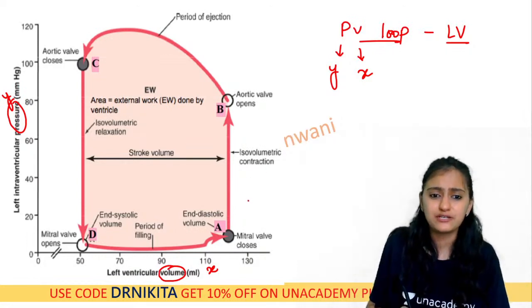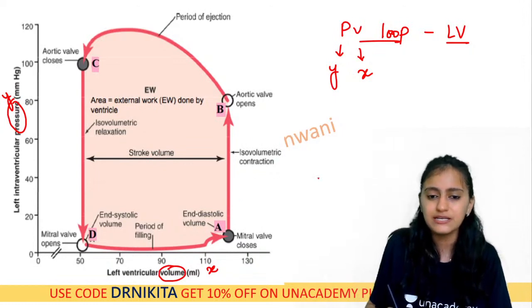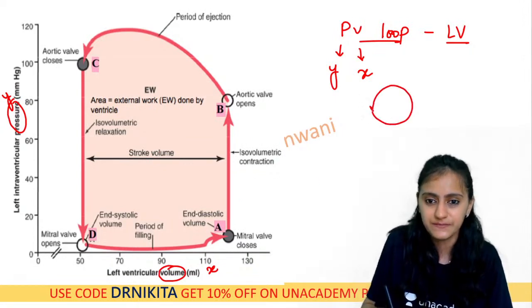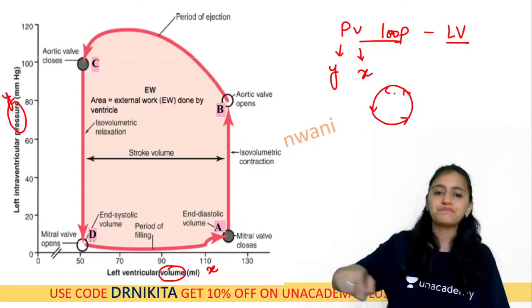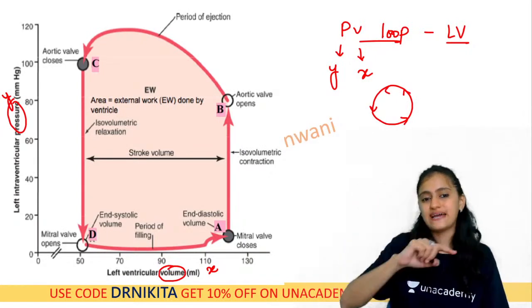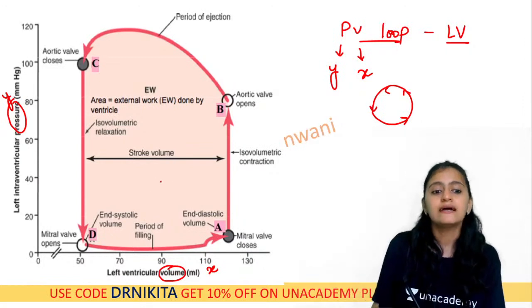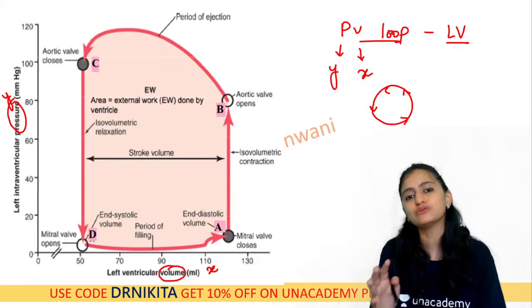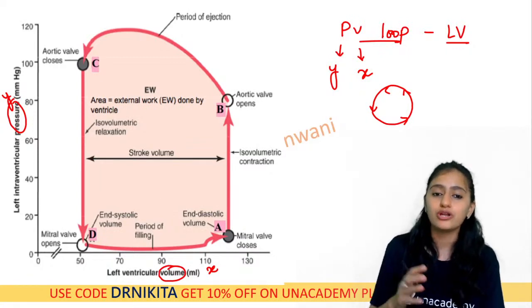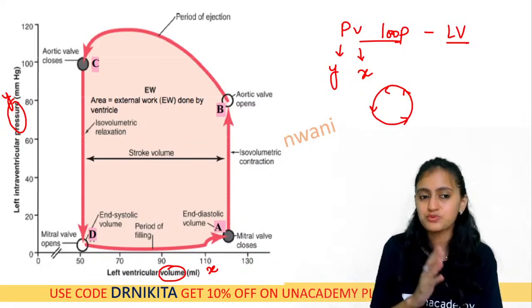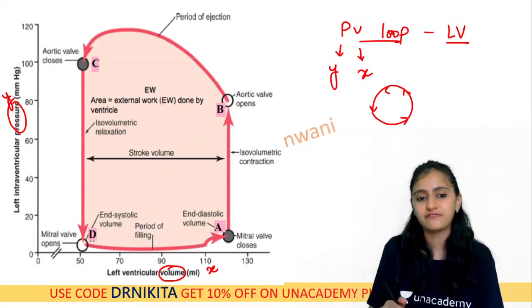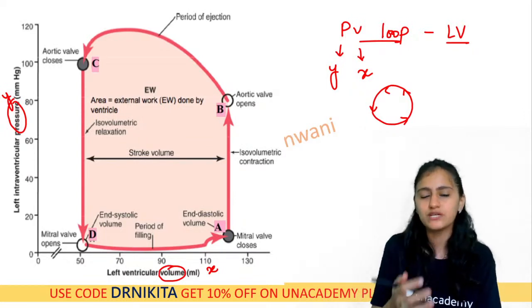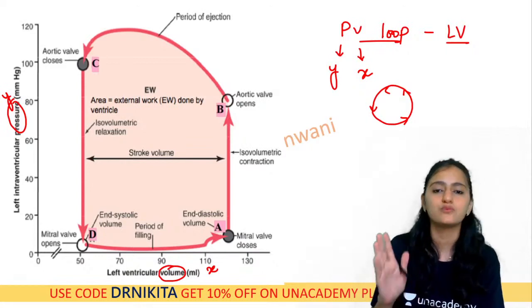You can see points A, B, C, D on the loop. The graph moves in an anticlockwise direction. Now, which phases are your isovolumetric phases? The isovolumetric phases are points A–B and C–D, because 'iso' means same — the volume remains the same, and those segments appear as vertical lines on the graph.